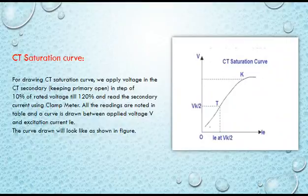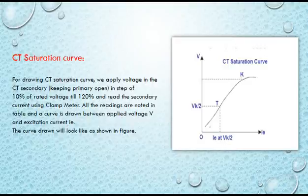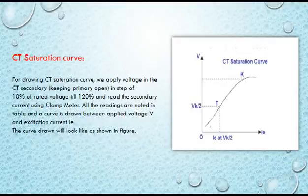Before understanding knee point voltage of a CT or current transformer, you have to understand what is the CT saturation curve. To draw the CT saturation curve, we apply voltage to the CT secondary with the primary side open, in steps of 10% of rated voltage up to 120%, and read the secondary current using a clamp meter. All readings are noted in a table.